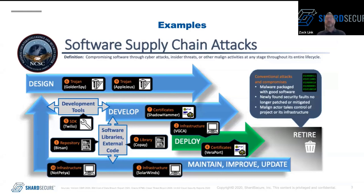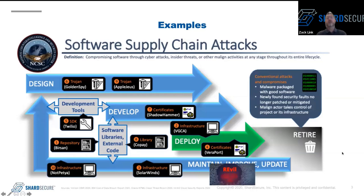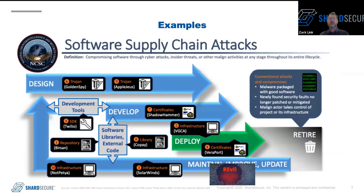Burson worked differently by tricking the build platform to use an attacker-supplied library instead of the internal library developers expected. Simply by making a public package with the exact same name and incrementing the version, the public version was preferred over the local version by the build platform. The latest example is the REvil ransomware from the attack on Kaseya, which was attacking the update mechanism of the VSA product — so just by upgrading your existing application, the ransomware is downloaded and executed as part of the update process.